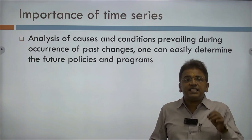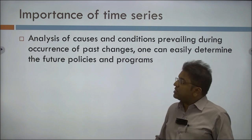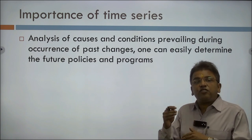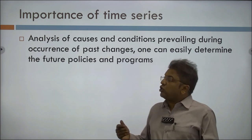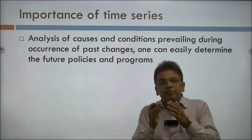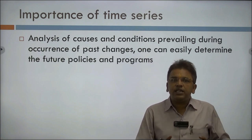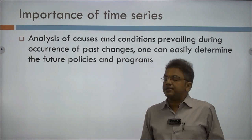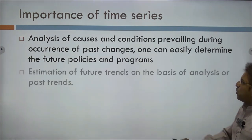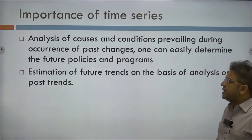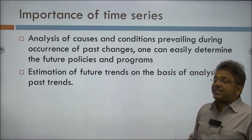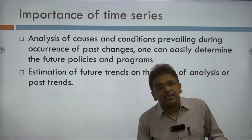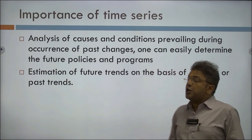In the month of January, certain diseases are going to occur. Because there is a time series tracking the rate of patients — if the rate is increasing in certain months, we can automatically predict that in future, this is going to happen. Accordingly, we have to take remedial actions to overcome that specific issue. Estimation of future trends on the basis of past trends means you can estimate the future — the past data can be checked and the future predicted.